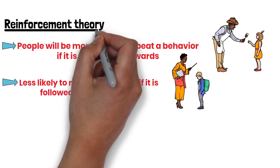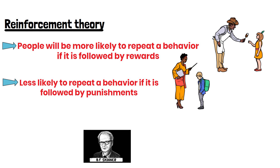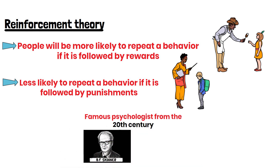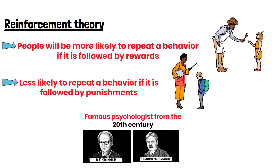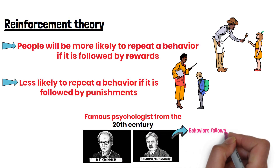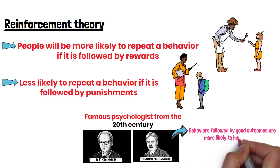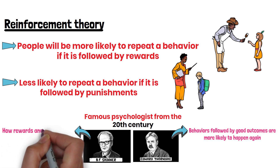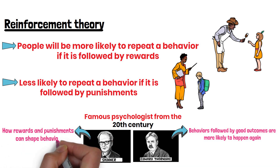Reinforcement theory comes from the work of B.F. Skinner, a famous psychologist from the 20th century. He built on earlier ideas by Edward Thorndike, who said that behaviors followed by good outcomes are more likely to happen again. Skinner developed this idea further, showing how rewards and punishments can shape behavior.